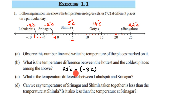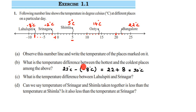So we have 22 minus (minus 8). When subtracting integers, the first number remains the same — that is 22 — the subtraction sign becomes a plus sign, and you use the additive inverse of the second number. The additive inverse of minus 8 is plus 8. So it becomes 22 plus 8, which equals 30 degrees Celsius. Alternatively, minus into minus is plus, so you get the same result. The additive inverse means the same number with the opposite sign.